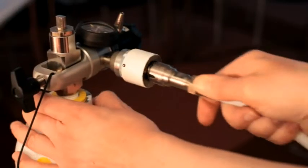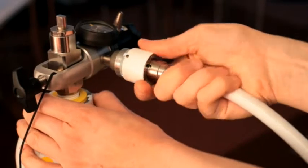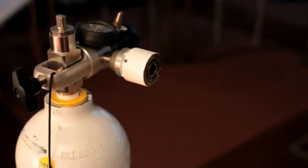A Schrader fitting can be attached by pushing it into the socket firmly until there is a positive click and it locks in place. The probe can subsequently be removed by rotating the socket collar clockwise.